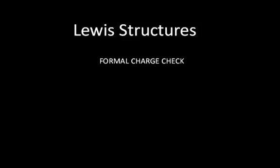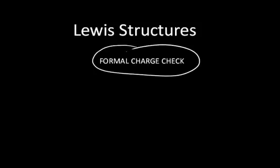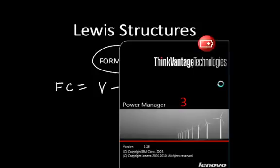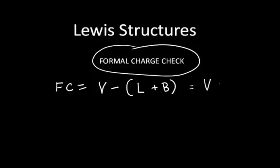Sometimes it's difficult to know if the Lewis structure you've created is actually correct, especially if you can come up with more than one structure. So there's something called the formal charge check, where you go through the structure and check the formal charge on each atom. The formula for formal charge is: formal charge equals the number of valence electrons on that atom, minus the sum of the lone electrons plus the number of bonds. Sometimes it's written as valence electrons minus lone electrons plus one-half the shared electrons, since each bond has two electrons. Either formula is the same — pick whichever makes more sense to you.